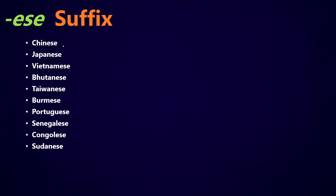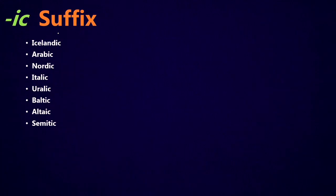The ESE ending, or the ESE suffix: Chinese, Japanese, Vietnamese, Bhutanese, Taiwanese, Burmese, Portuguese, Senegalese, Congolese, Sudanese. This one seems to mainly get used for countries that are in East Asia or in Africa. The only one that's not is Portuguese, which is in Europe. But the other ones seem to be either East Asia or Africa. And the IC suffix usually gets used for language groups: the Nordic languages, the Arabic language, Italic, Uralic, Baltic, Altaic, Semitic. These are groups of people or groups of languages — the only one that's an individual language is Icelandic. The other ones are groups of languages or regions.